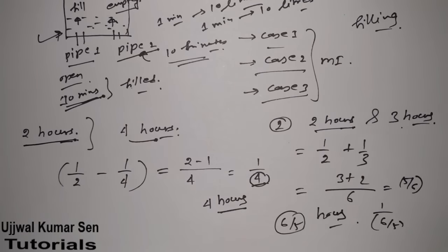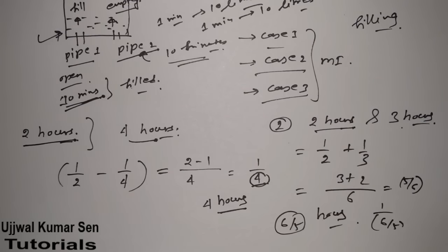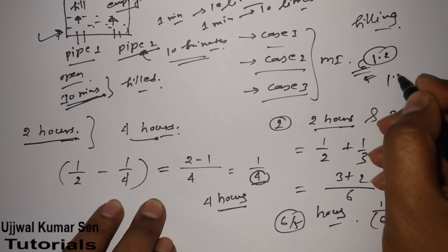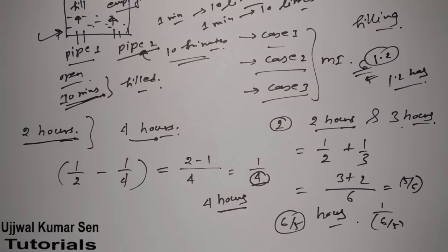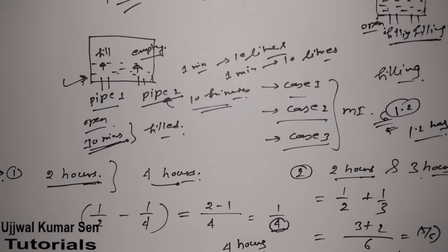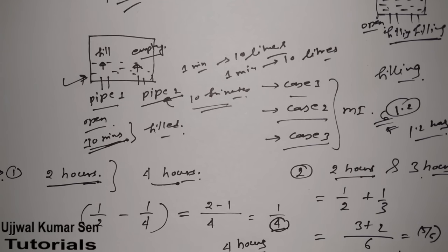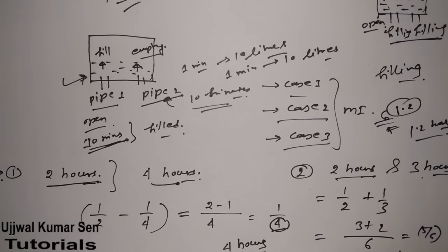So 6/5 hours equals 1.2 hours. The key rule is: whenever a tab is filling the tank, we consider it positive; whenever a tab is emptying the tank, we consider it negative. That is when to do addition and when to do subtraction.